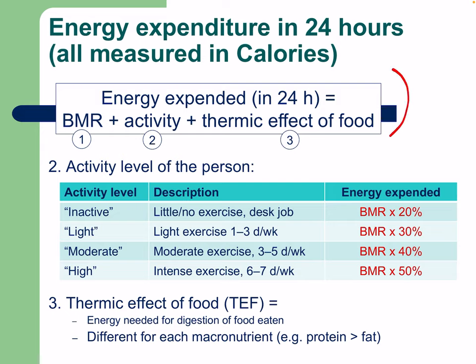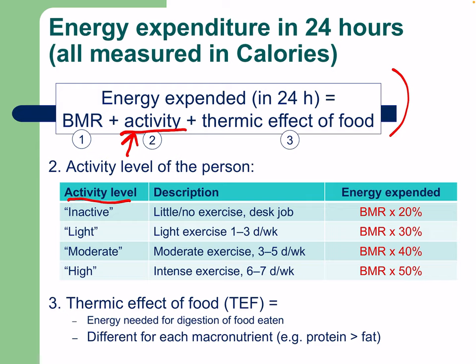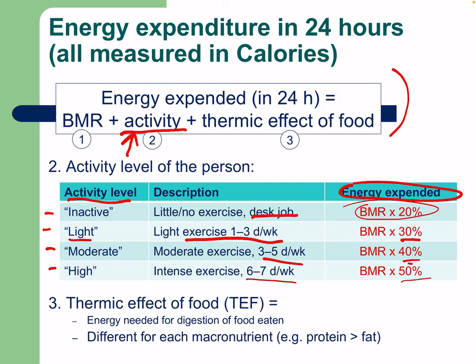Using the BMR formula as a base, activity is categorized as: inactive (little or no exercise, desk job) — BMR times 20%; light exercise (1–3 days/week) — times 30%; moderate (3–5 days/week) — times 40%; high intensity (6–7 days/week) — times 50%. The thermic effect of food (TEF) is the energy needed to digest food, calculated as total caloric intake times 10%. Different nutrients produce different TEF; for example, protein results in a greater thermic effect than fat.